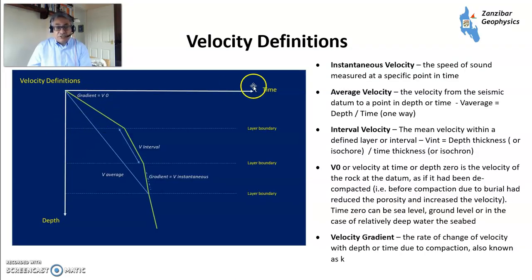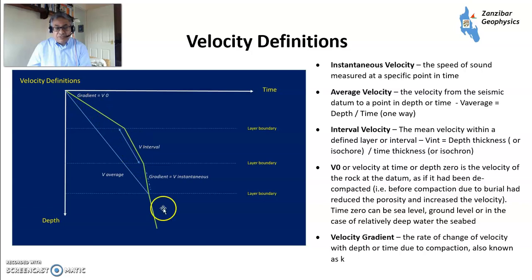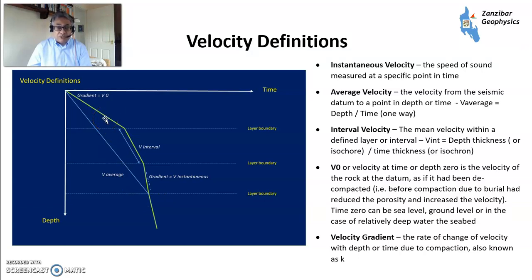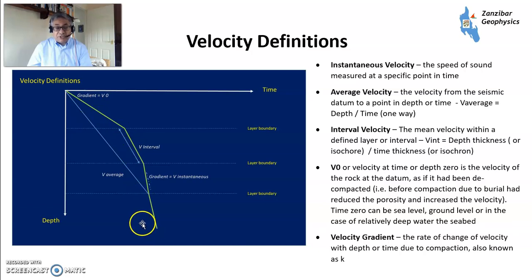A little bit of velocity definition. Velocity is the rate of change of time to depth, so here you have a gradient. Average velocity is the velocity from the datum to the target horizon. Instantaneous velocity is the speed of sound in the rock at a specific point in time. Interval velocity is the average velocity for a particular interval. V0 is what the velocity of the rock would be at datum. And the velocity gradient is the rate of change of velocity — basically the acceleration.